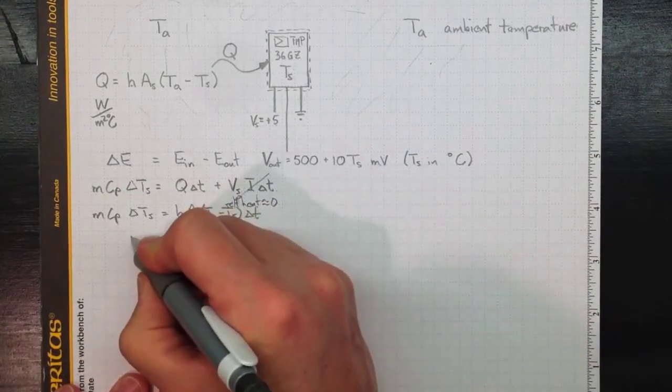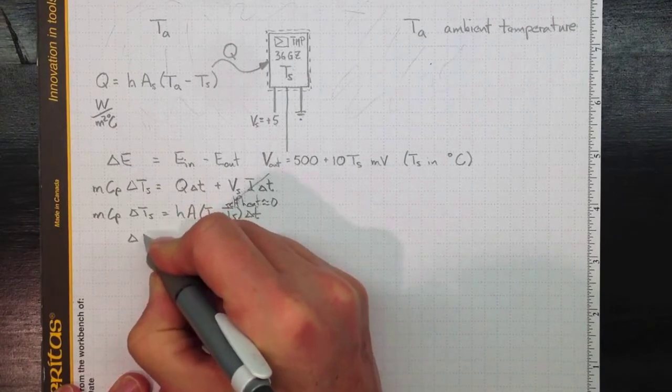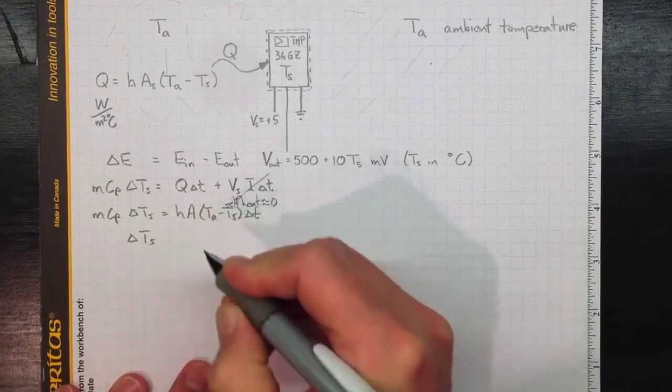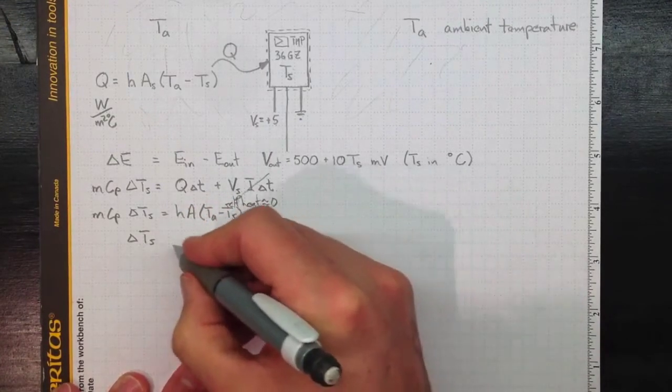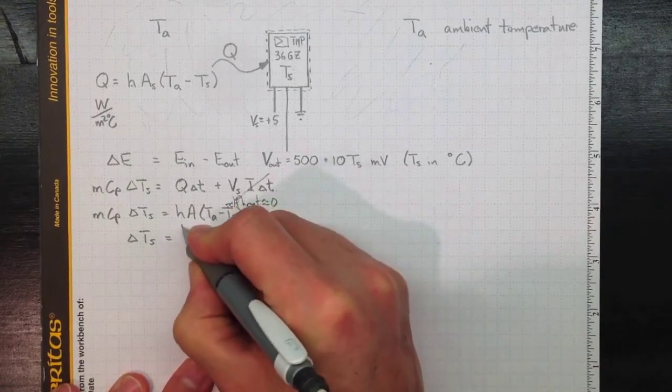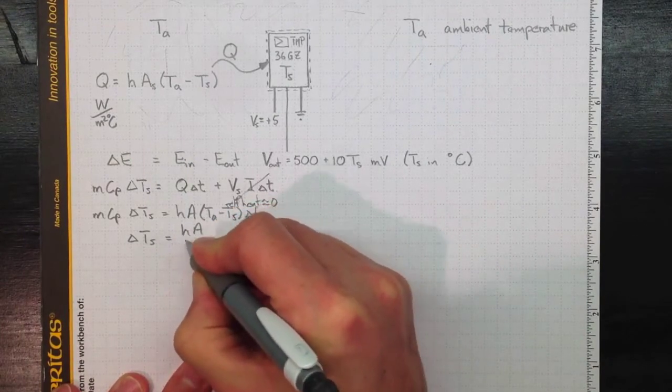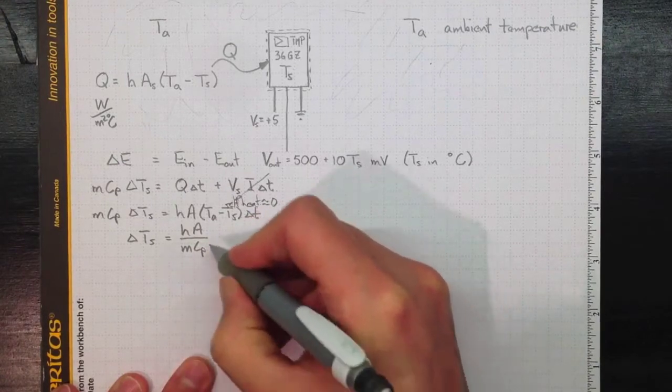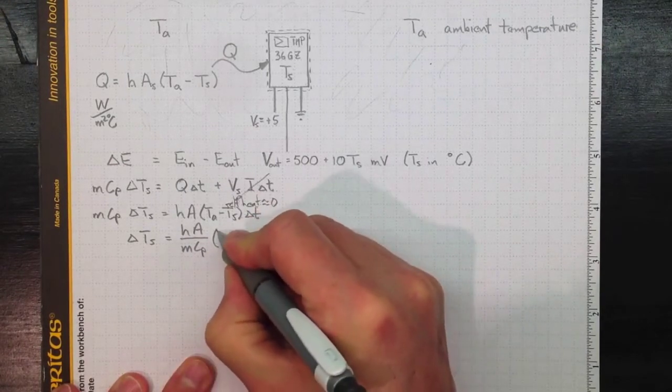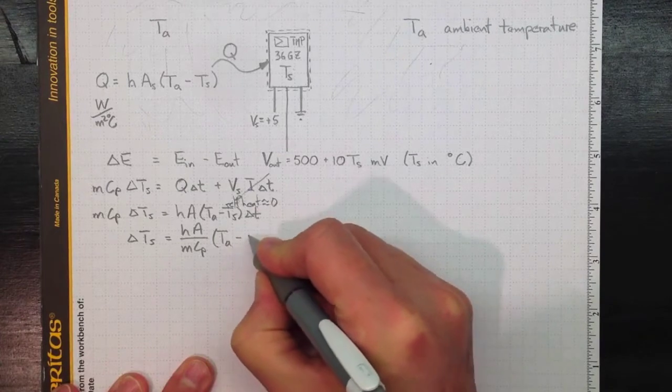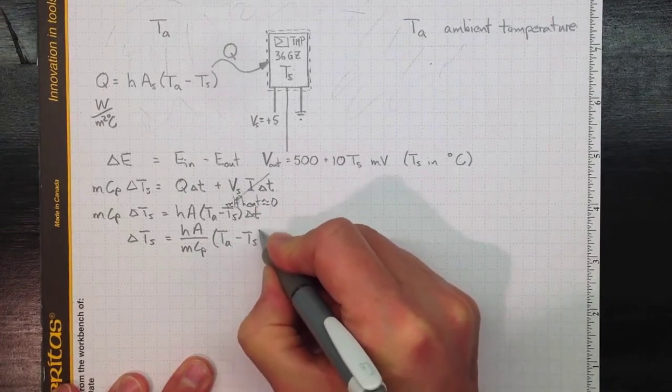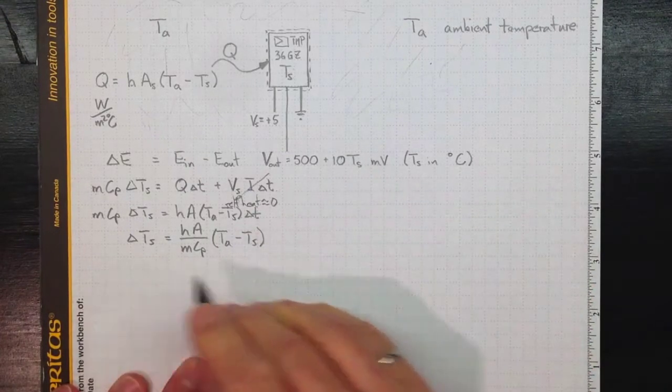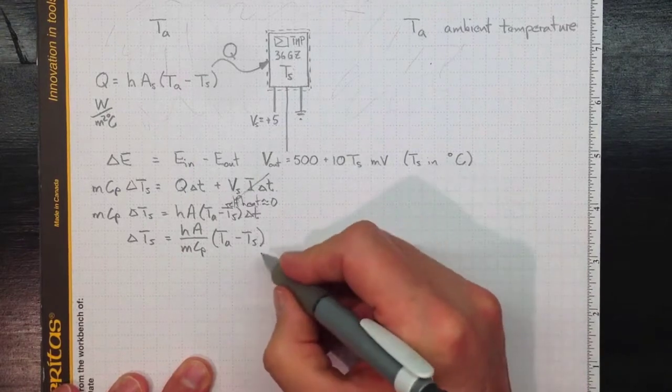Or rearranging that, we can expect the temperature of the sensor to change by an amount equal to HA over MCP times the difference in temperature between the ambient temperature and the sensor. So the bigger the difference, the faster the temperature will change, times delta T.